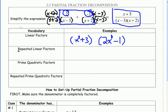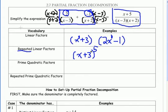A repeated linear factor is when you take a linear factor, say x plus 3, but the same linear factor repeats, which we represent with an exponent. So x plus 3 to the fifth power is really x plus 3 times x plus 3 times x plus 3 times x plus 3 times x plus 3. The linear factor x plus 3 is repeated five times.